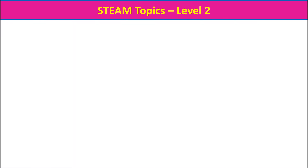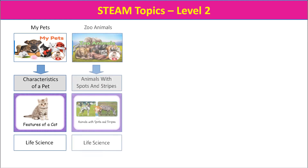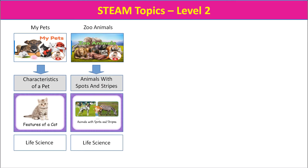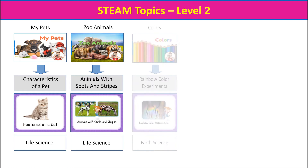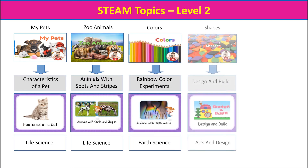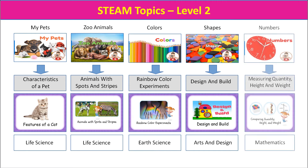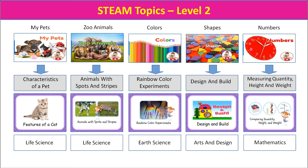At Level 2, the topics are Characteristics of a Pet, Animals with Spots and Stripes, Rainbow Color Experiments, Design and Build with Shapes, and Compare Quantity, Height, and Weight.